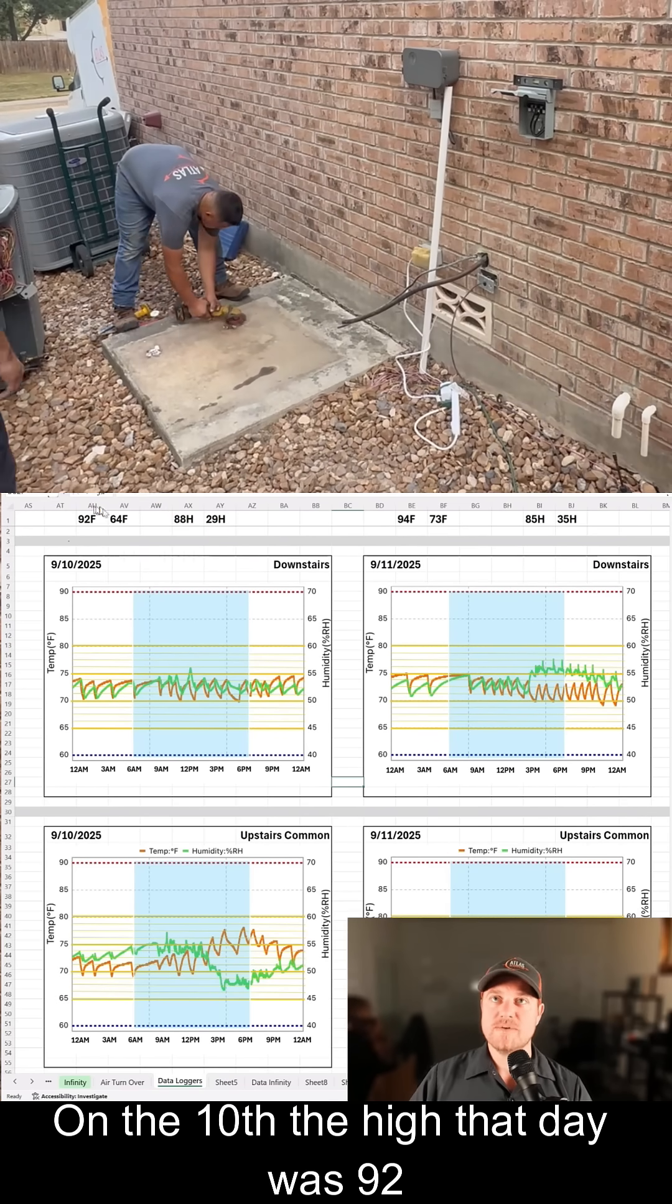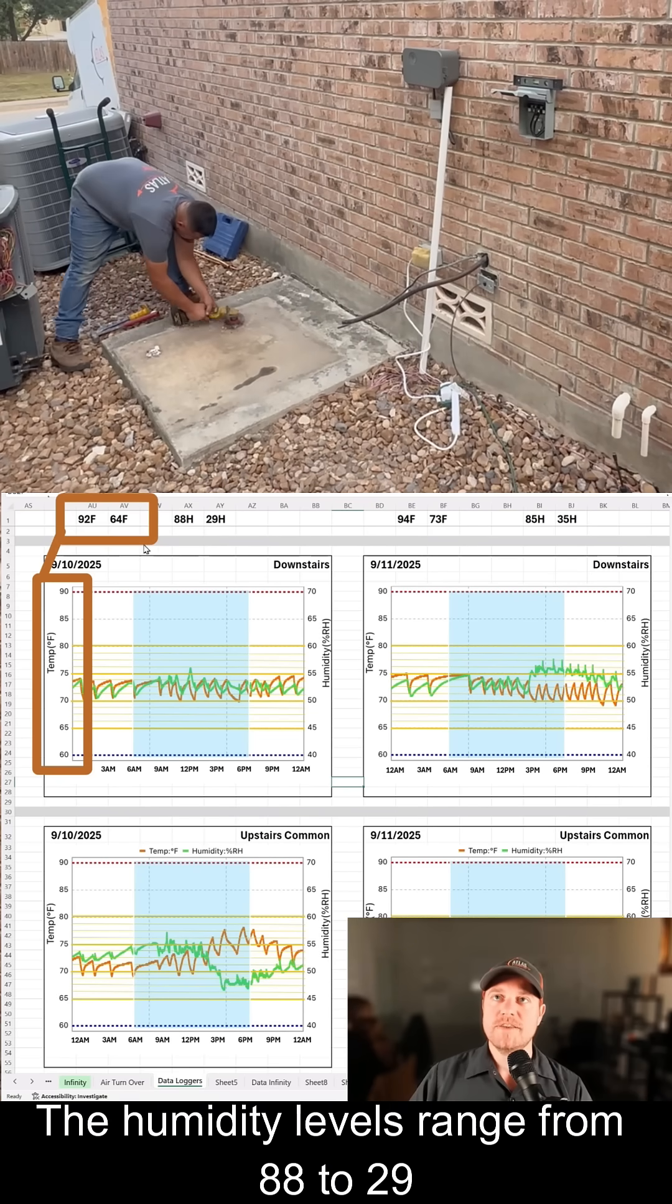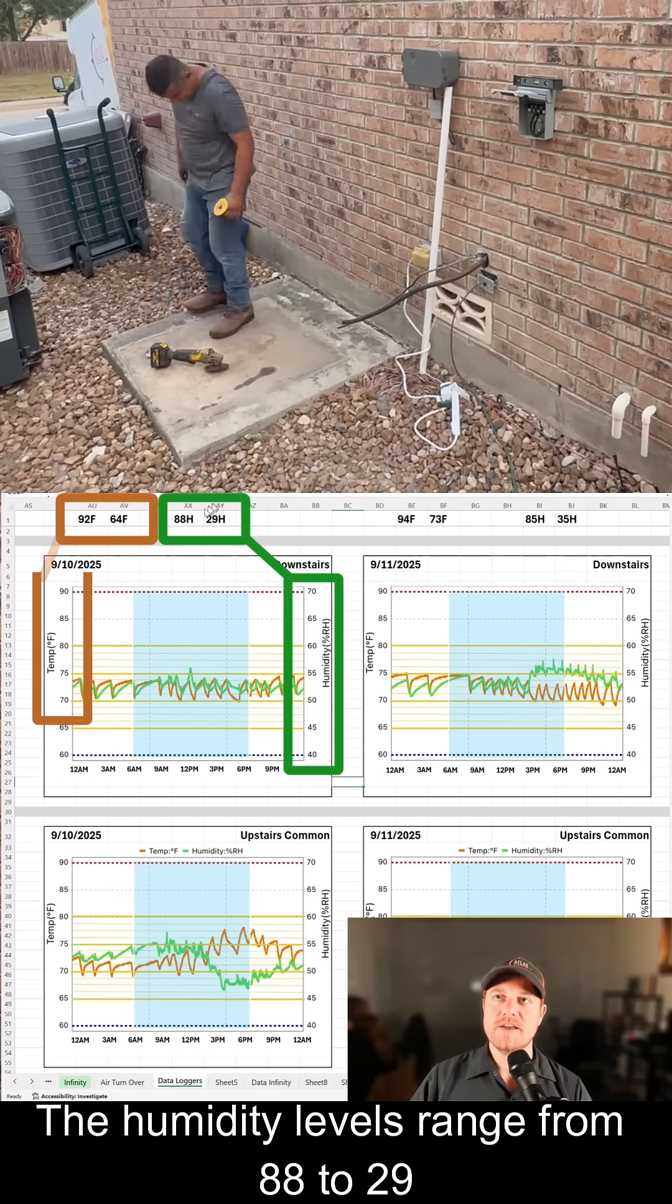On the 10th, the high that day was 92 degrees, and the low was 64 degrees. The humidity levels range from 88 to 29 percent.